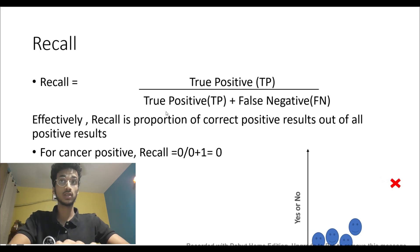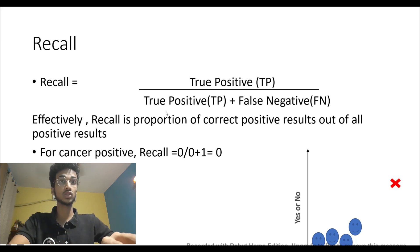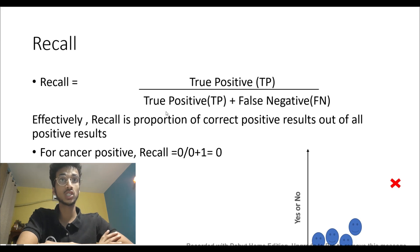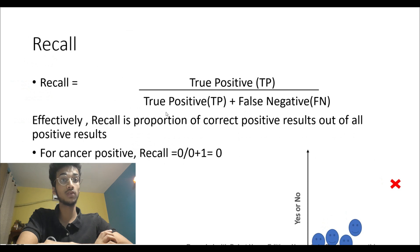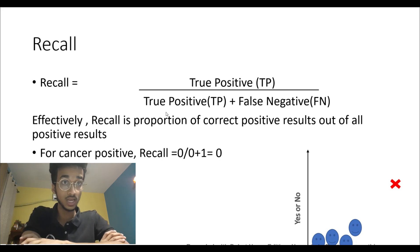Recall is true positive divided by true positive plus false negative. Instead of false positive in the denominator we have false negative. This makes recall the proportion of correct positive results out of all actual positive results. For the cancer example, recall equals zero in the numerator since no cancer cell was identified correctly. The denominator has true positive zero plus false negative one — the one cancerous case the model wrongly called non-cancerous. So we have 0/(0+1), which is again 0%.